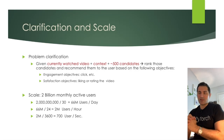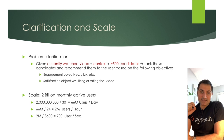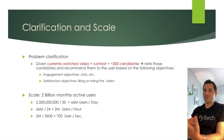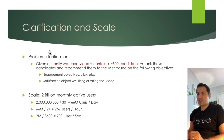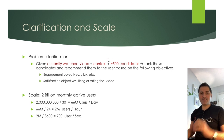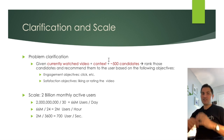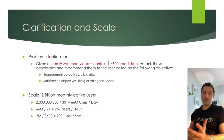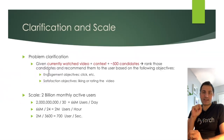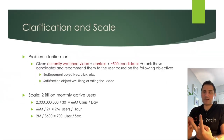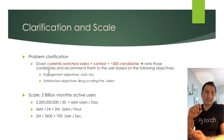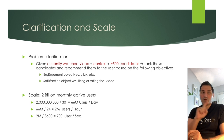Let's clarify the problem. Given the current watched video, the context — such as time of day, day of week, day of year — and 500 candidates, design a system that ranks those candidates based on two objectives: engagement (like clicking or watching the video) and satisfaction (like liking or rating the video).